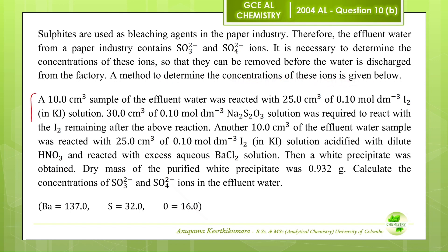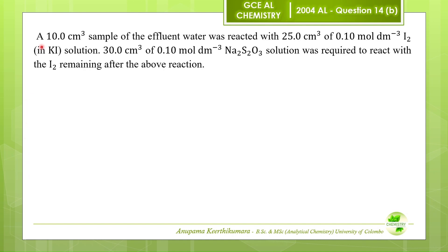This is the method to calculate the concentrations of these ions, and finally you have to calculate the concentrations of sulphite and sulphate ions in the effluent water. Now we will carefully read the given method. A 10 cubic centimetre sample of the effluent water was reacted with 25 cubic centimetres of 0.1 moles per cubic decimetre iodine solution.